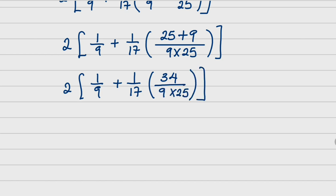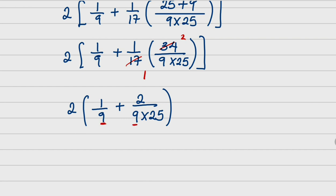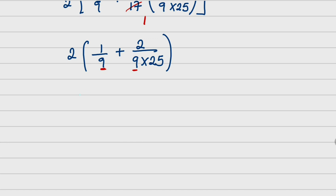Close the bracket, and we can now see that 17 here cancels with 17 here. So going further, I have 2 into 1 over 9 plus 2 over 9 times 25. Now we have come again because here is 9 and here is 9. So I can factorize 1 over 9, so that I am going to have 2 over 9 outside, then into 1 plus 2 over 25.